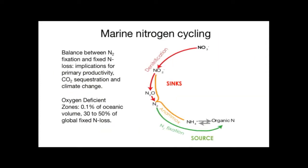We care about nitrogen because it's an essential macronutrient in the ocean, with implications for CO2 sequestration, primary productivity, and climate change. It's the balance between sinks and sources of bioavailable or fixed nitrogen that controls its availability in the ocean. The main sinks are denitrification — the conversion of nitrate to N2 gas — and anammox, the conversion of ammonium and nitrite to N2. The main source is N2 fixation in the ocean.